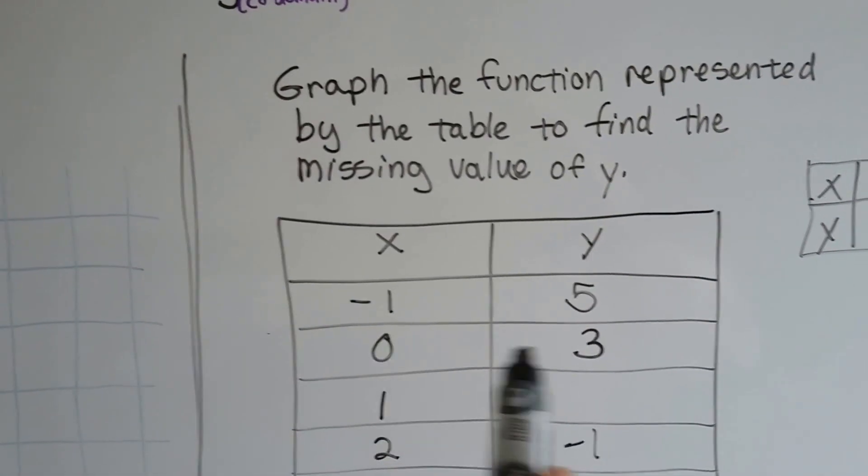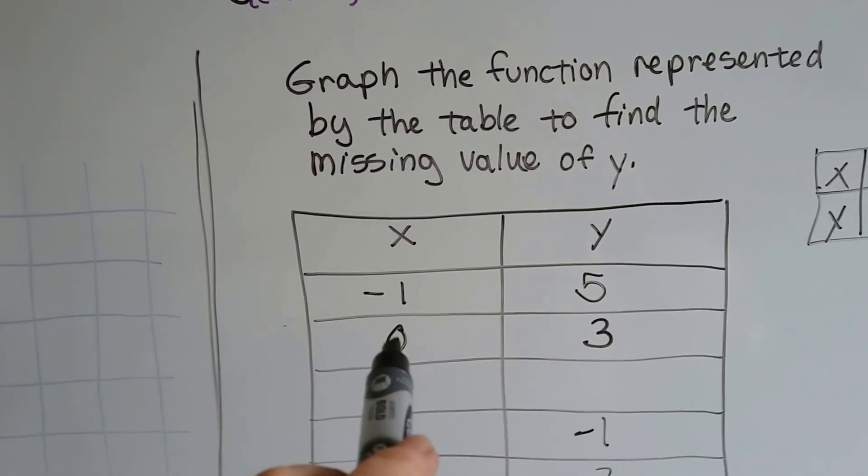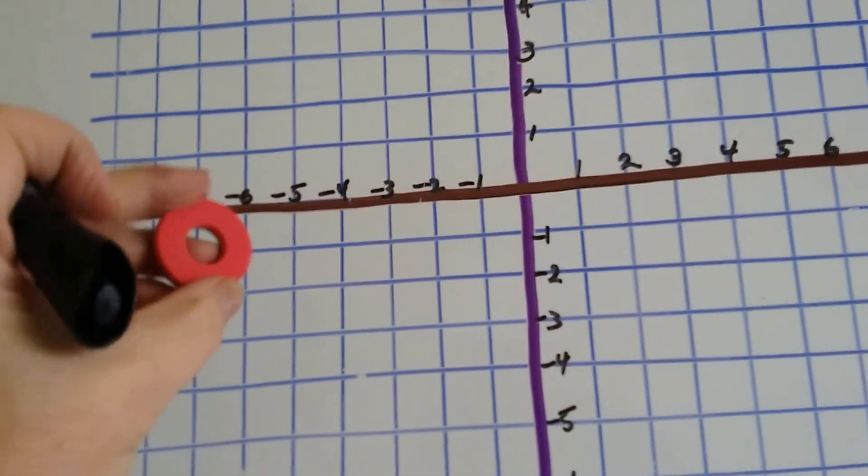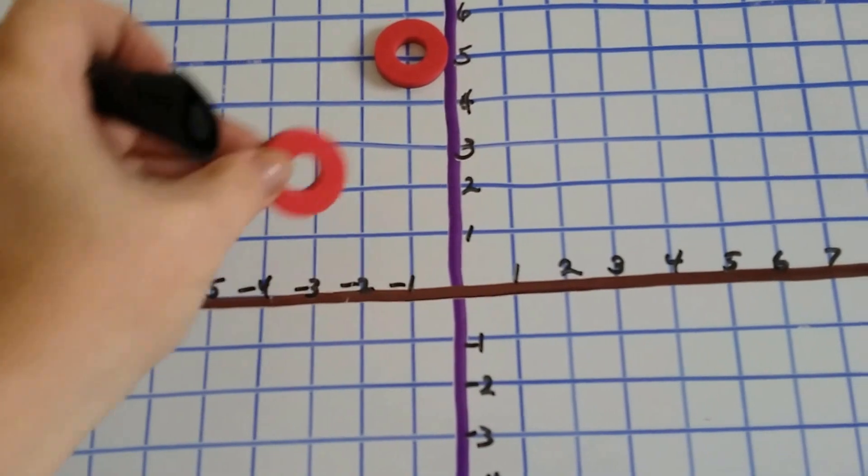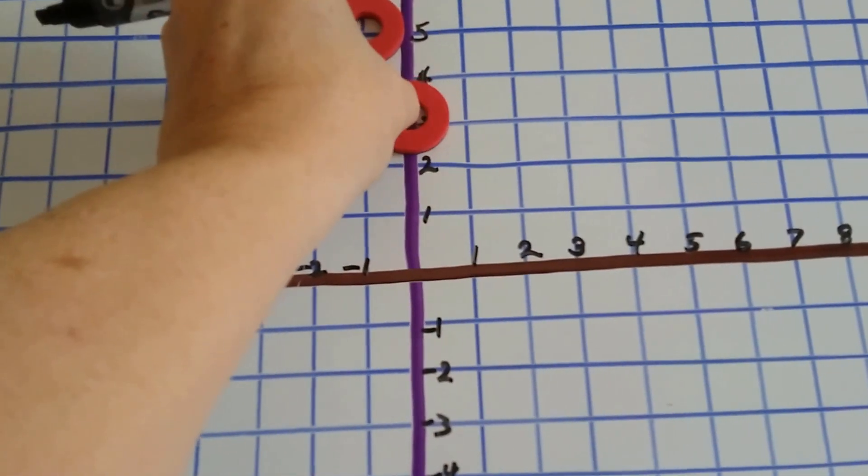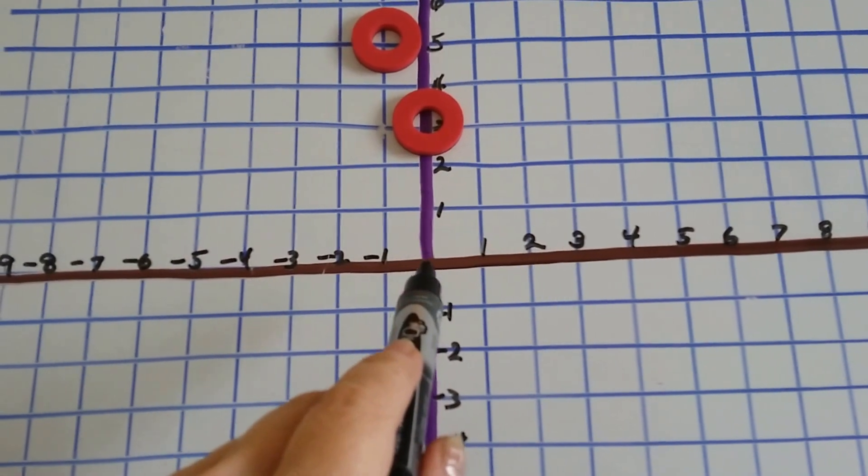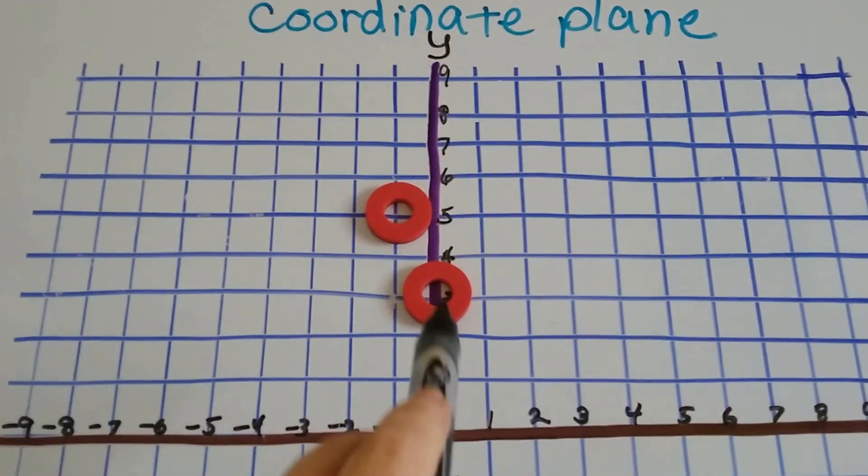The next one is at 0, 3. So 0 on the x, but positive 3 on the y. 0 on the x, but positive 3 on the y is going to put us right here. So we're 0 for the x, but positive 3 for the y.